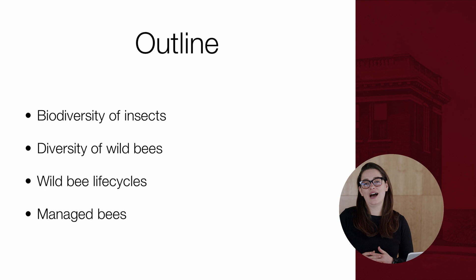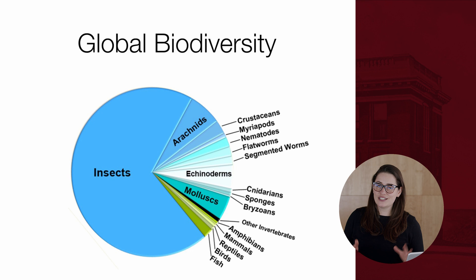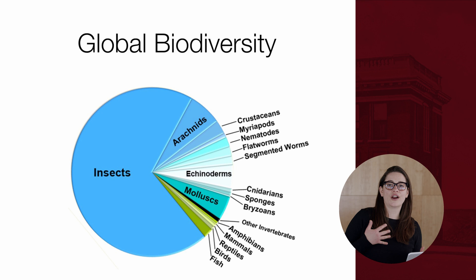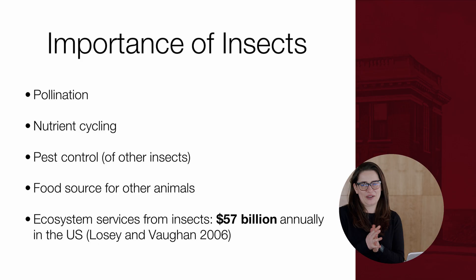I'm going to show you a pie chart of global animal biodiversity. Each piece of pie represents the number of species in each animal group. As you can clearly see, there are far more insect species than any other animal group — insects make up the vast majority of our animal biodiversity. Yet when we talk about conservation of biodiversity, our focus becomes much more narrow and we tend to ignore these really important insect species.